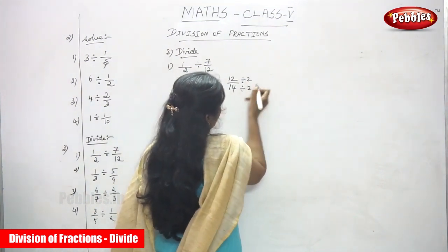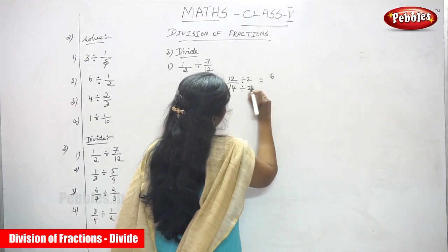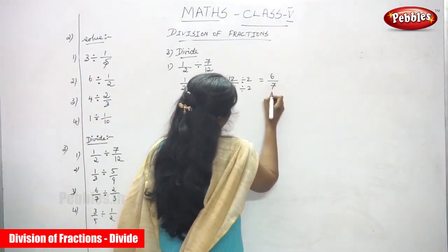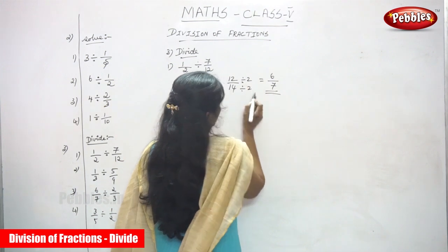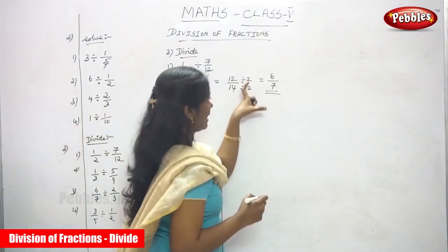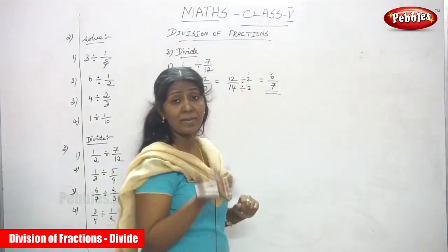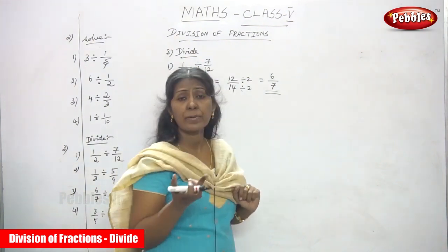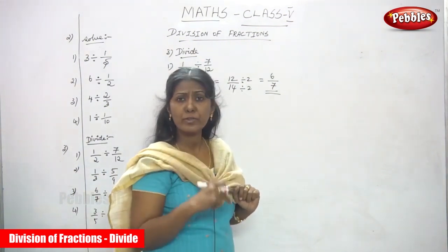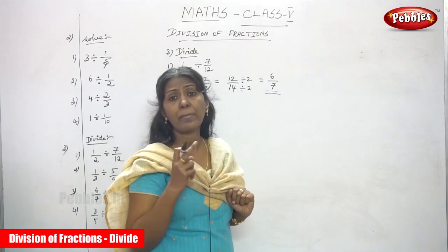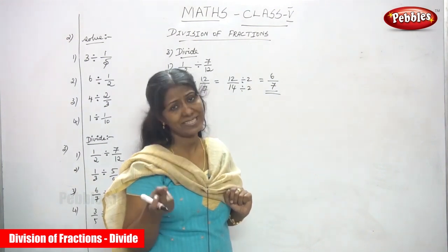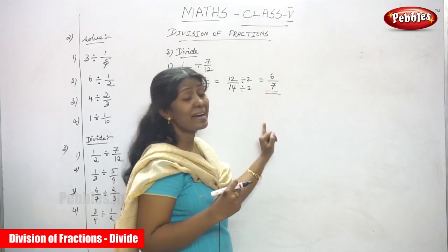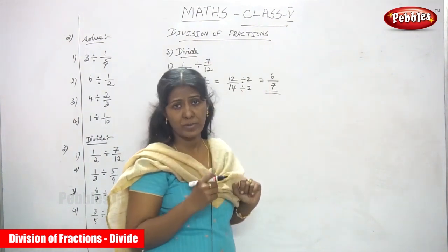The common divisor is 2. Divide both numerator and denominator by 2: 12 ÷ 2 = 6 and 14 ÷ 2 = 7. So the answer is 6/7.